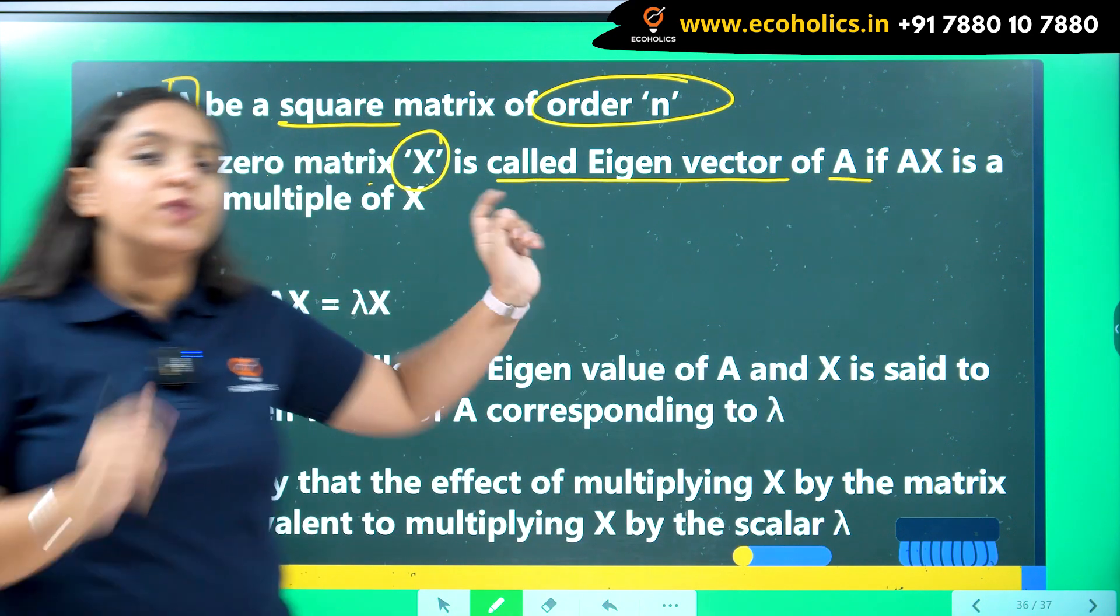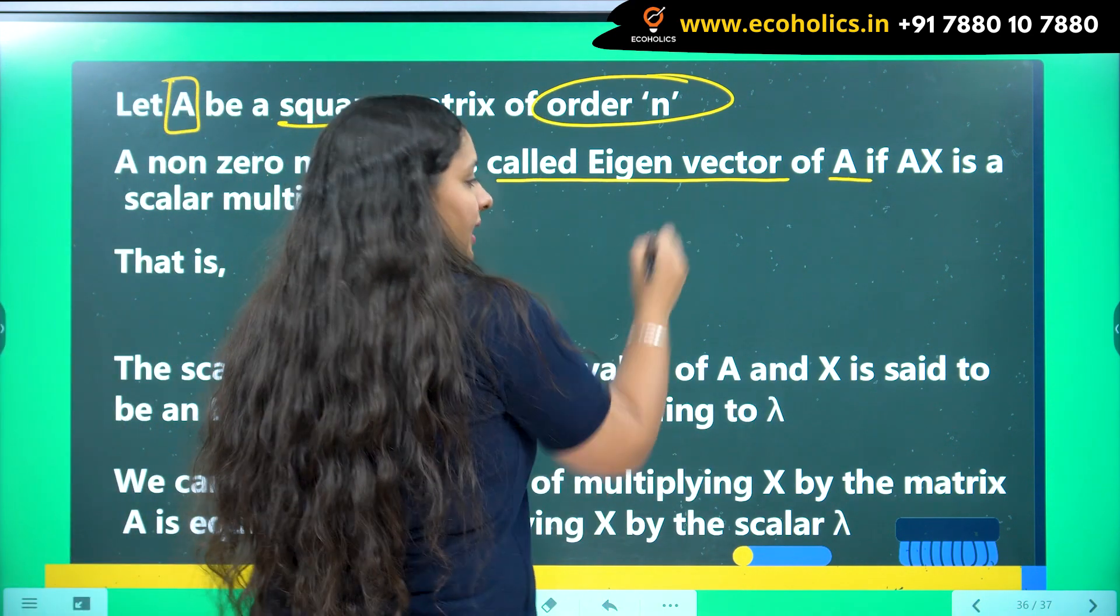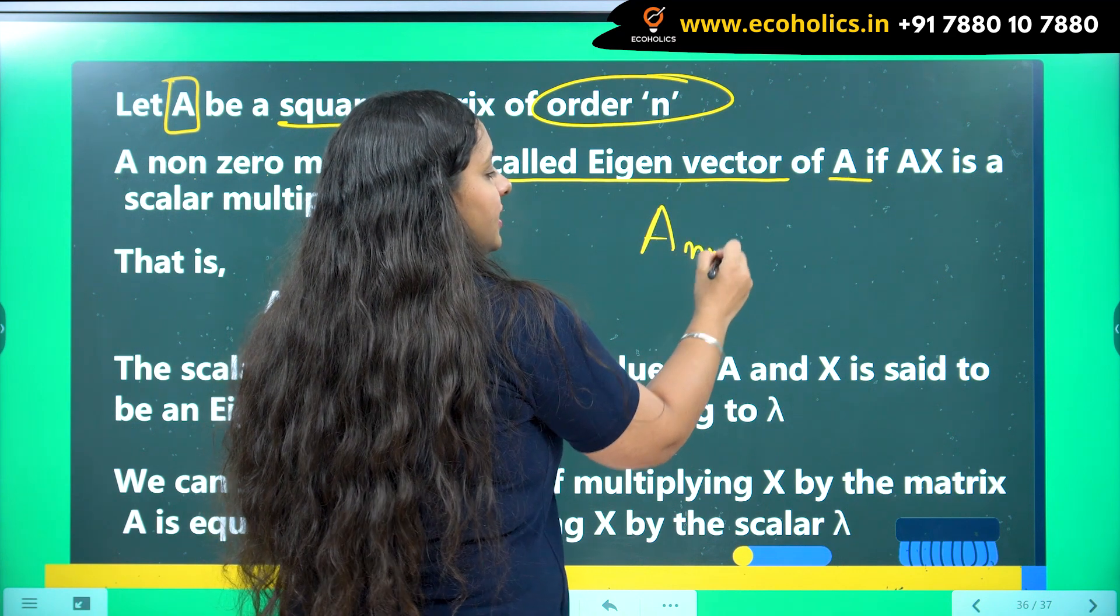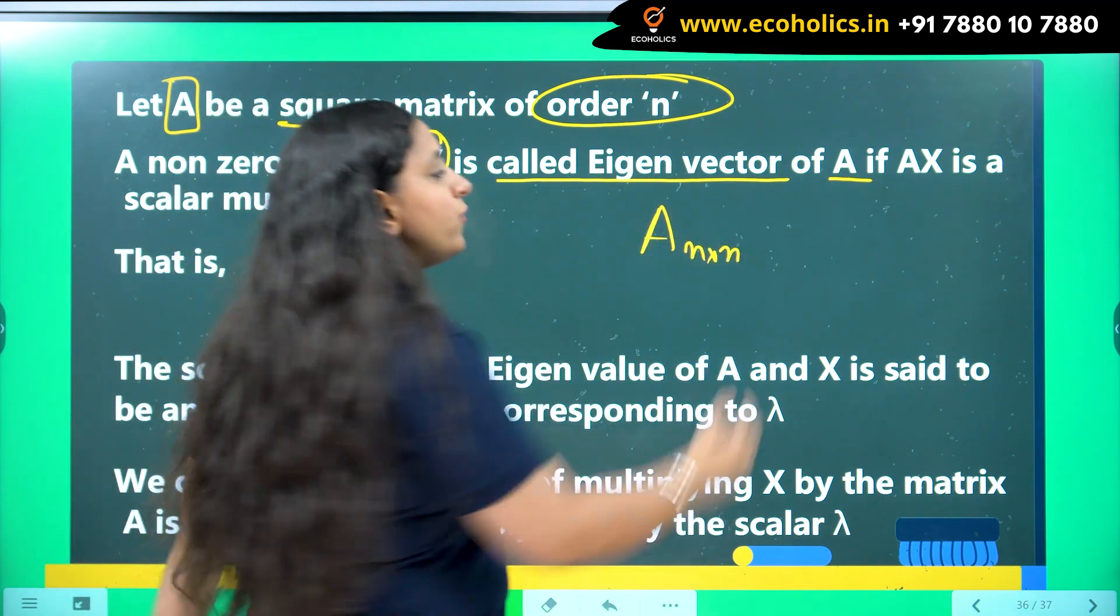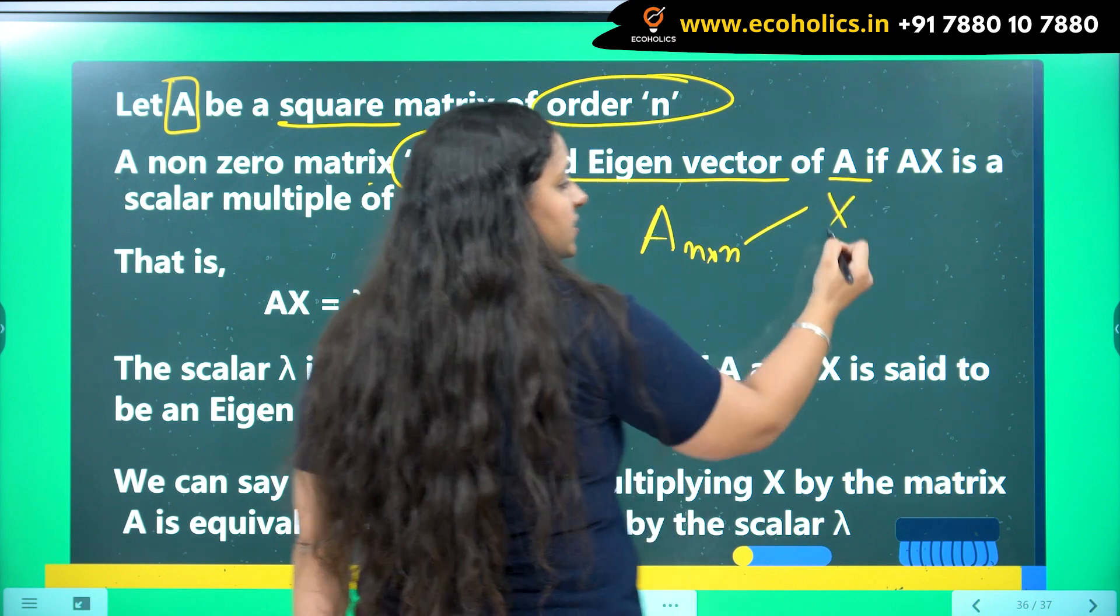Now I am working, the given matrix to me is A for which the order is N and now I am trying to find its eigenvector which is X. If AX is a scalar multiple of X.